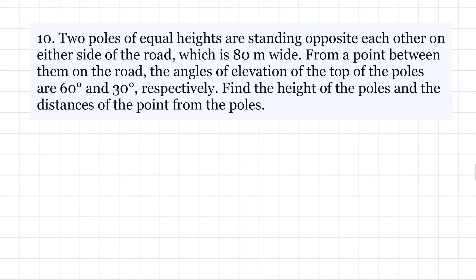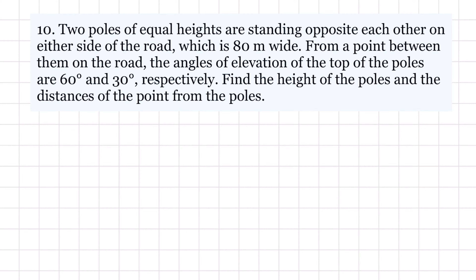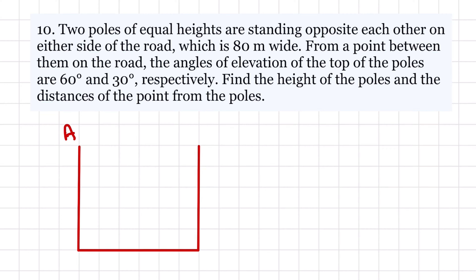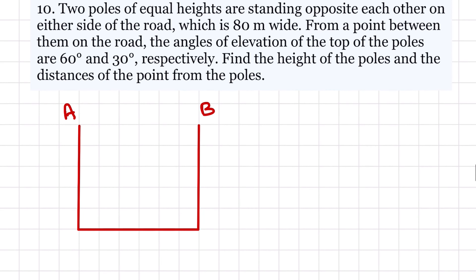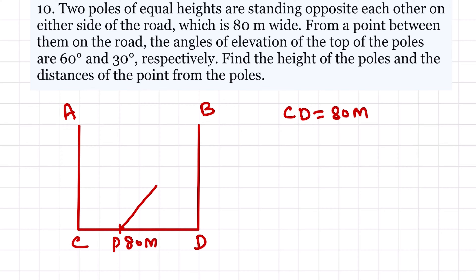Question number 10. Two poles of equal heights are standing on opposite sides of the road. This is a road and on both sides there are poles — let this be pole A and this be pole B. The road width is 80 meters, so CD = 80 meters. From a point P between them on the road, the angles of elevation of the tops of the poles are 60° and 30°.